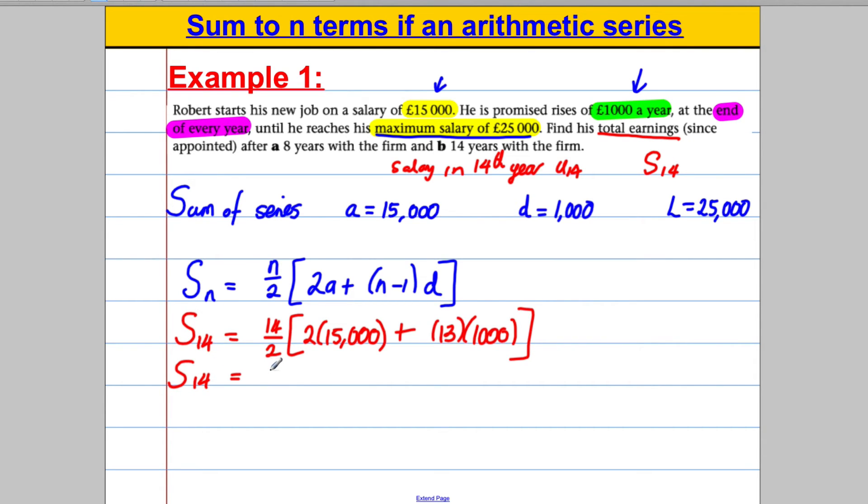Let's tidy this up. S14 would therefore be 7 brackets, 2 multiplied by 15,000 is 30,000 and 13 multiplied by 1,000 is plus 13,000. So S14 is going to equal 7 multiplied by 43,000. So you could go over here and do 7 multiplied by 43, an easier calculation, which is going to be equal to 301. So therefore, 7 multiplied by 43,000 is going to equal 301,000. And the answer is 301,000 pounds. And we are done.